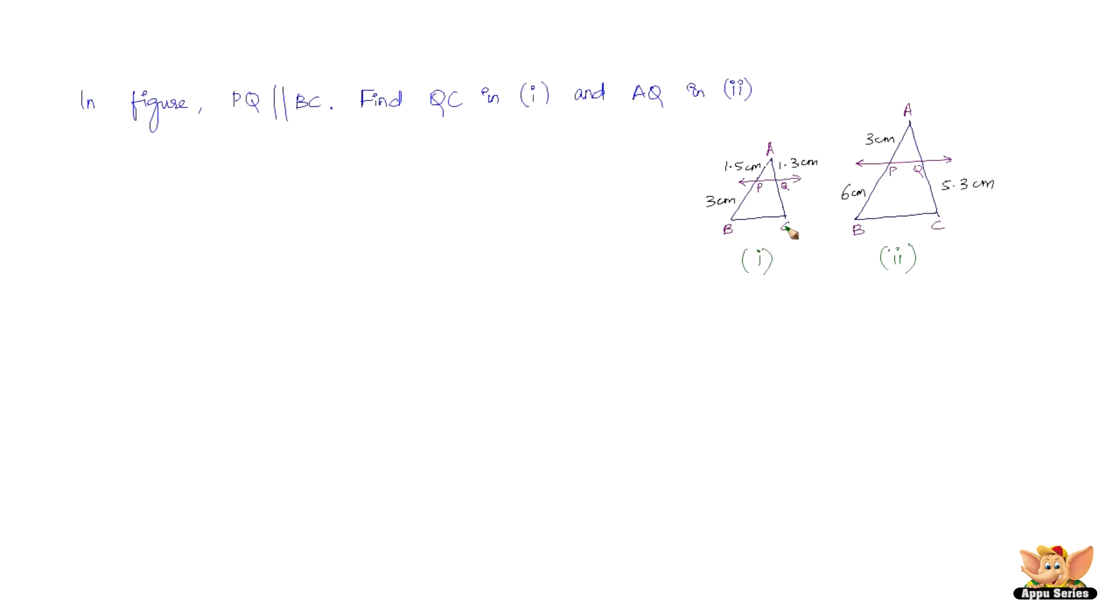In figure 1, because PQ is parallel to BC, by the basic proportionality theorem we have AP by BP equals AQ by QC. AP is 1.5, BP is 3, and AQ is 1.3. We need to find QC. 1.5 goes 2 times in 3, so QC equals 2 times 1.3, which is 2.6 centimeters.